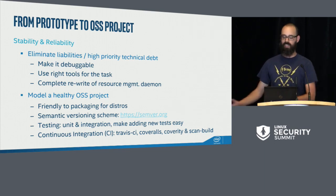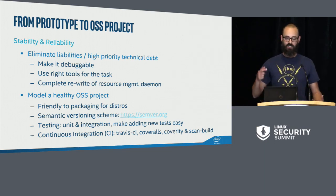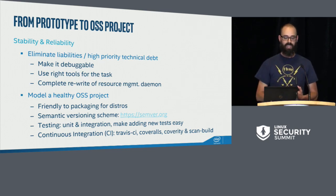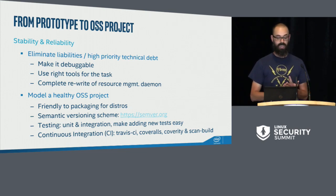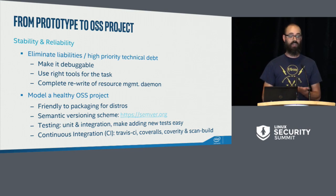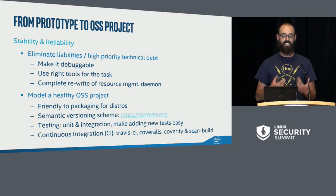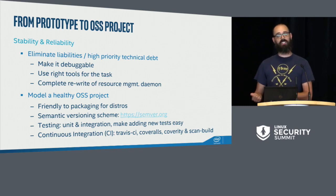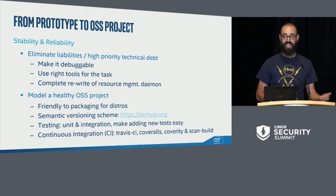When I picked it up I had to triage, pay down technical debt, identify code that was a liability, and figure out how to make it debuggable. When someone sends a bug report, how do I get meaningful information out of it? A lot of this got down to the right tools. When I inherited the project, the build system was one handwritten makefile. That doesn't make it easy for distros to package. I chose autotools; CMake would have done the task just fine too.